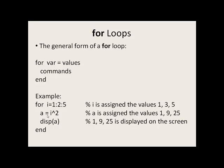We start off with i equals 1. i squared is also 1, so a gets the value of 1. We display 1 to the screen, and we come to the end of the loop. We jump back up to the top. i now takes on the next value, which is 3. 3 squared is 9; we display 9 to the screen, and we come to the end of the loop. We go back up to the top. i takes on the final value, which is 5. a is equal to 25. We display 25 to the screen, and i has no more values it can be assigned, so the loop terminates.